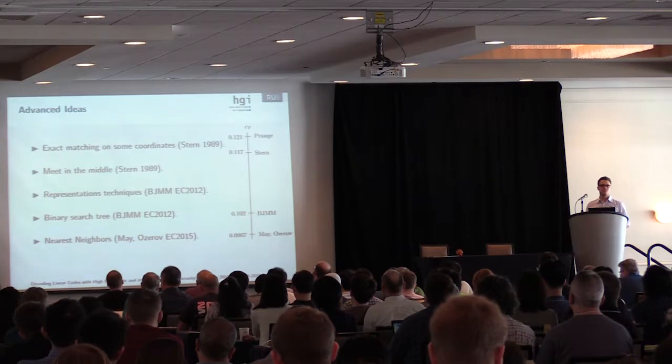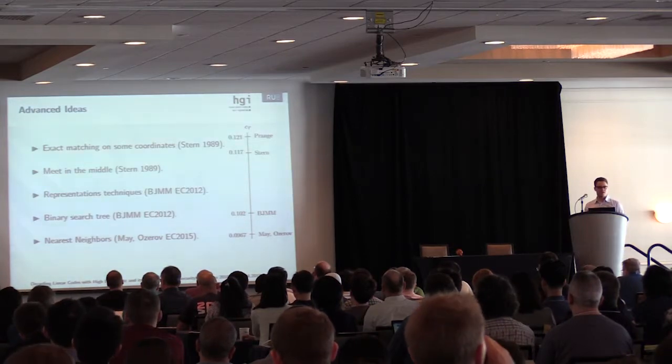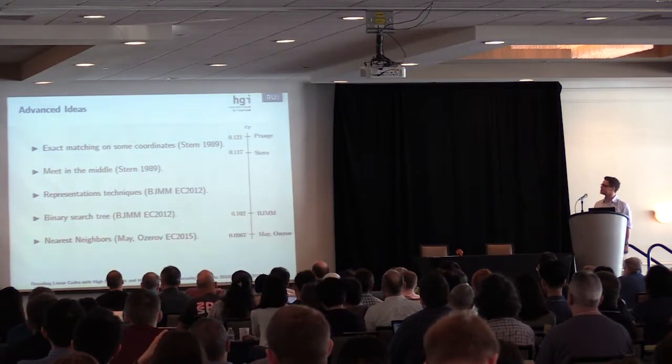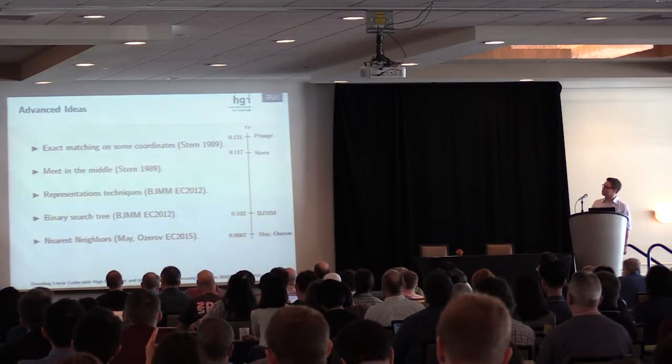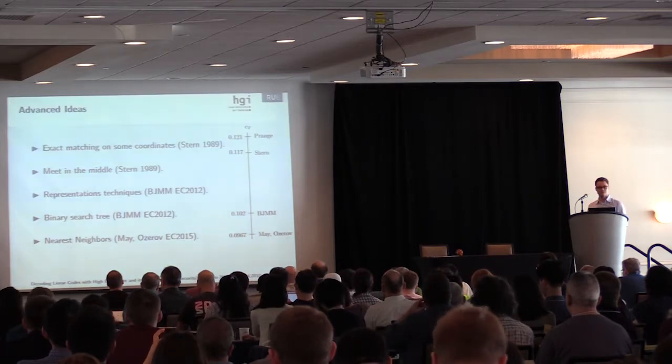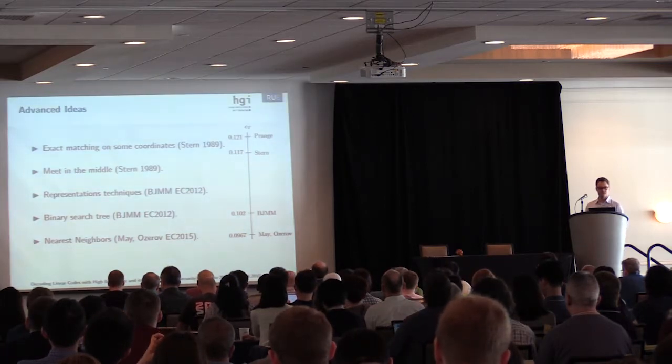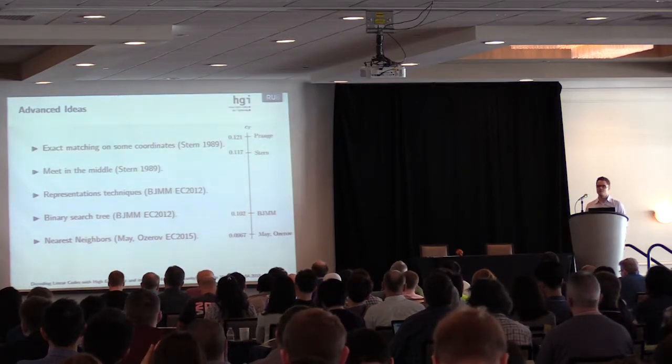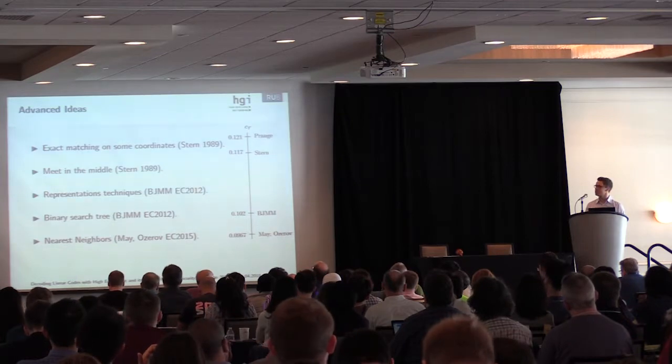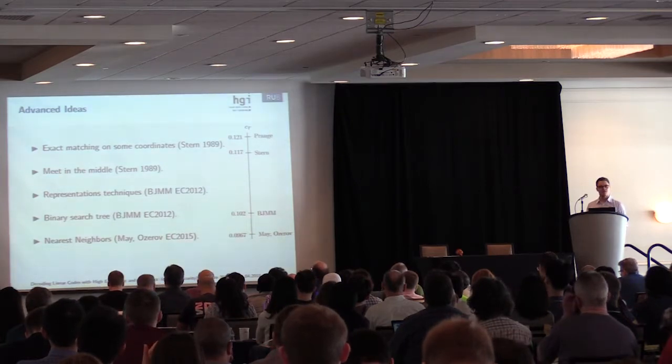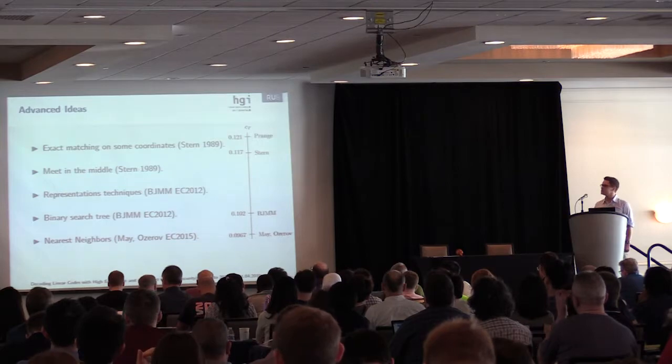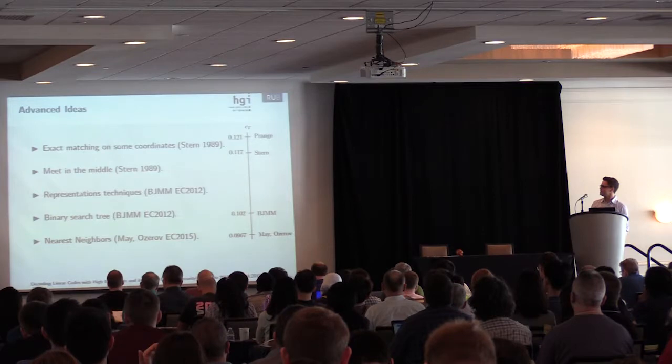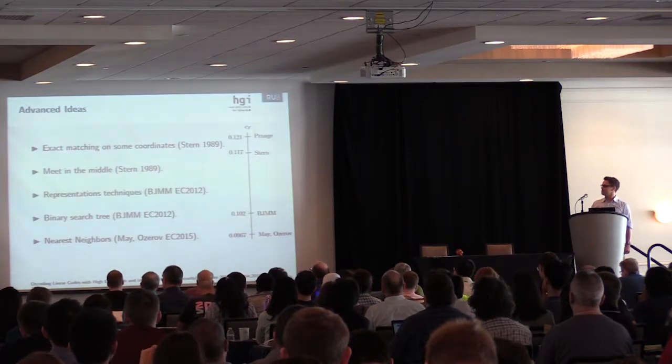Over the years there were many improvements to Prange's algorithm and many advanced ideas. The first important step was Stern in 1989, who first added some exact matching on some coordinates. So we don't match for weight omega minus p only anymore, but we fix some zeros. The next step was to add the meet-in-the-middle technique to enumerate the vector e1.